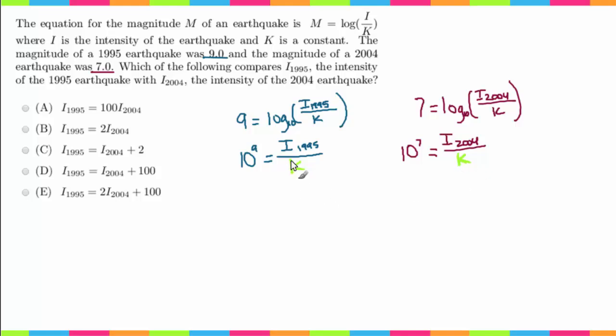So what I'm going to want to do in this case, or what would come to mind, is I would want to solve this for K and solve this one for K so that we can use substitution to end up showing the relationship between the two intensities. So let me walk through that so I can show you what I mean by that.